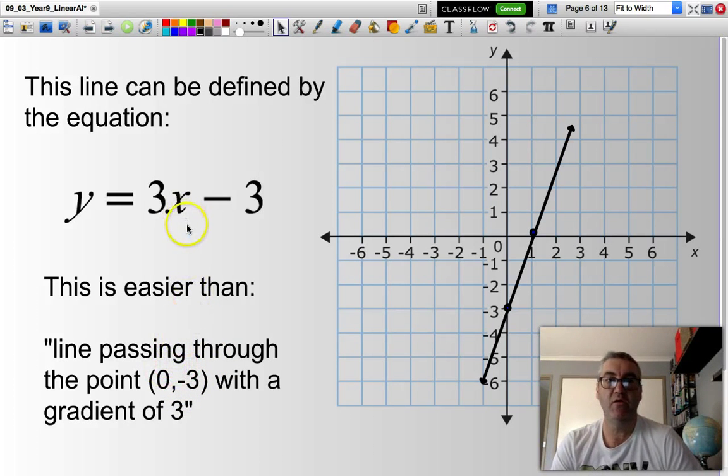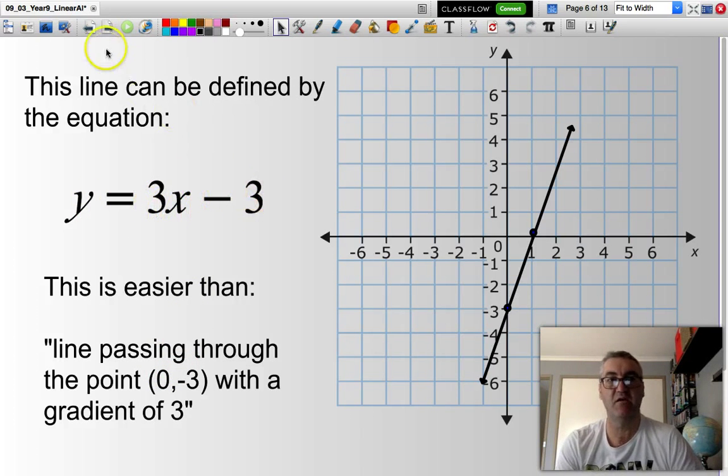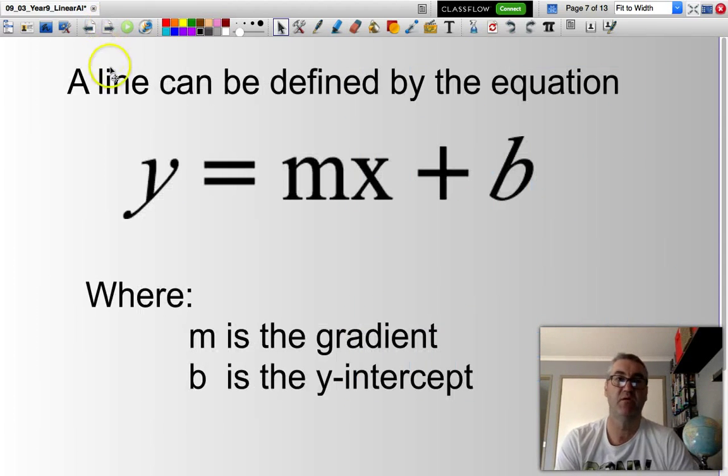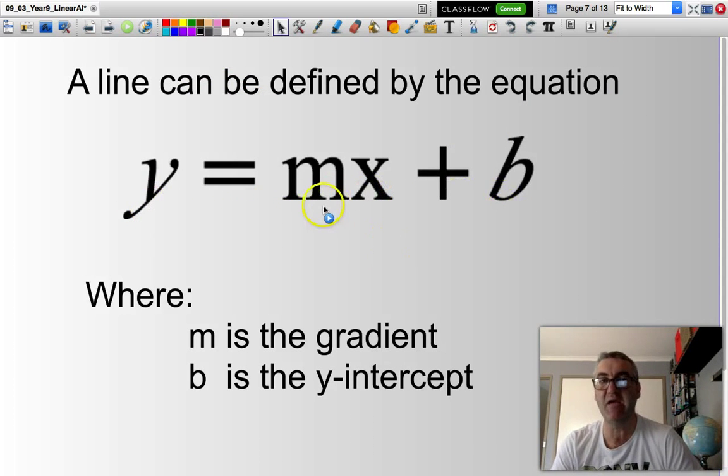So we will be working with this particular format of equations. A line can be represented by the equation y equals mx plus b. Now, m is the gradient. It's the number that we assign to the steepness of our line.